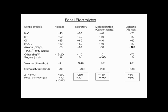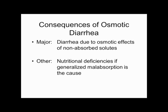The osmotic gap is calculated from stool electrolytes: measure sodium and potassium, multiply their sum by two, and subtract from plasma osmolality (about 290 mOsm). Anions are too varied to measure reliably. A gap over 100 strongly suggests osmotic diarrhea. Osmotic diarrhea can also occur from generalized malabsorption of all nutrients, which can cause nutritional deficiency symptoms as well.